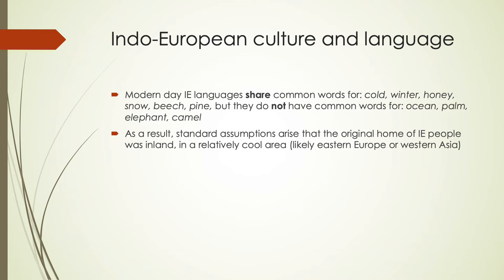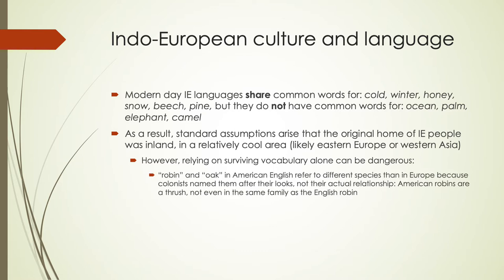This is not completely set in stone but is based on the evidence we have. Relying only on surviving vocabulary can be dangerous because there are ways that vocabulary appears common but isn't. For instance, robin and oak are words in American English that refer to very different species than what exist in Europe, because the colonists named them after what they look like and not the actual historical relationship. American robins are actually a type of thrush, not even the same family as the English robin.